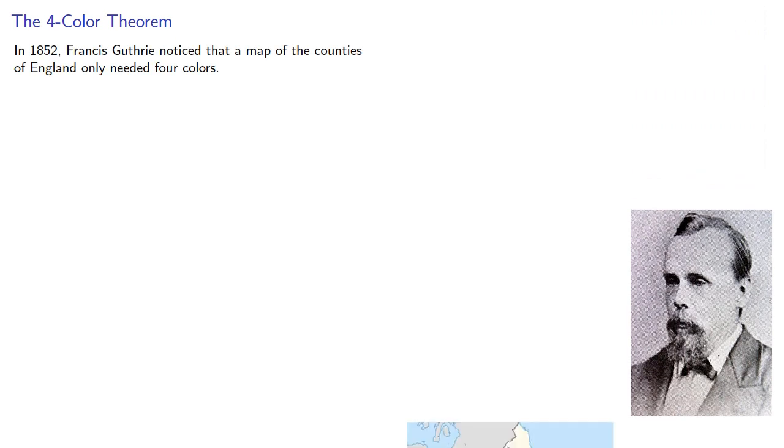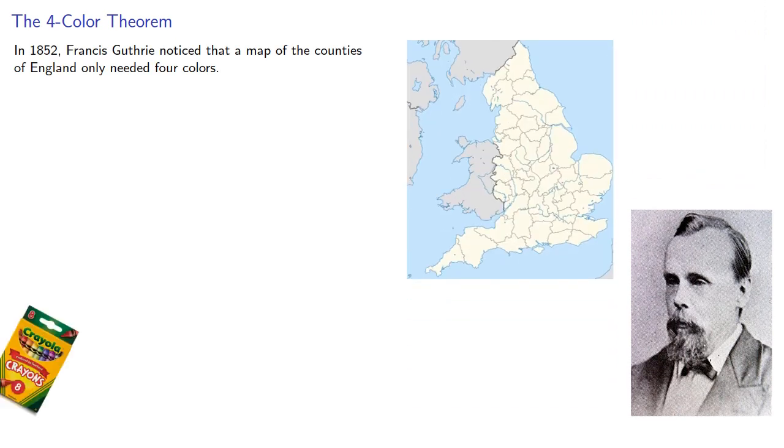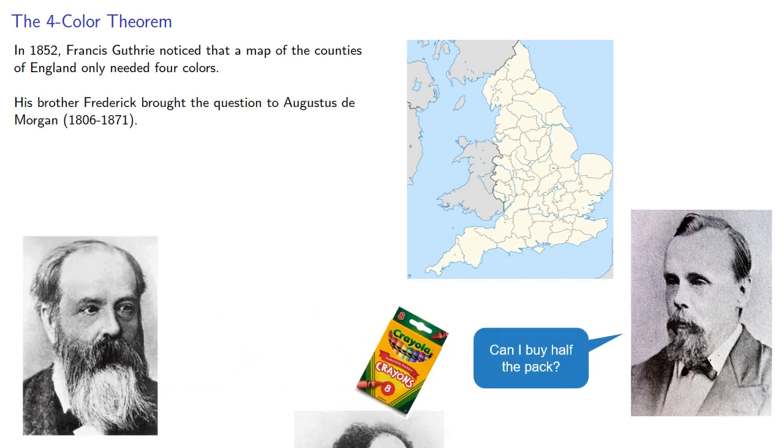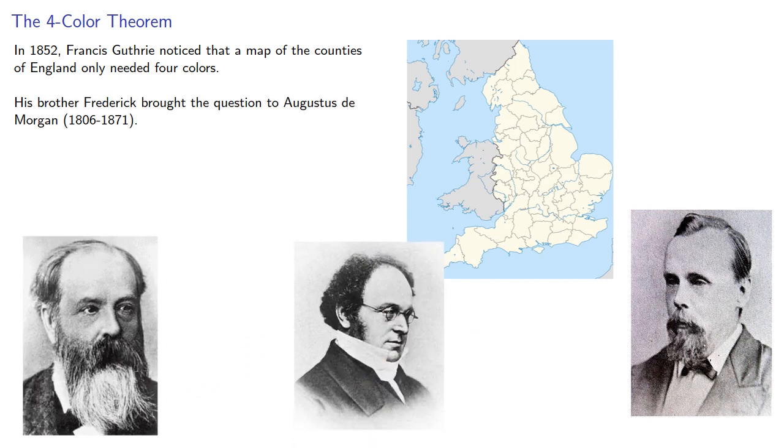In 1852, Francis Guthrie noted that a map of the counties of England only needed four colors. His brother Frederick brought the question to Augustus de Morgan. Both Guthries had been students of de Morgan and went on to become scientists in their own right. De Morgan brought the problem to the attention of other mathematicians like Hamilton and Cayley.